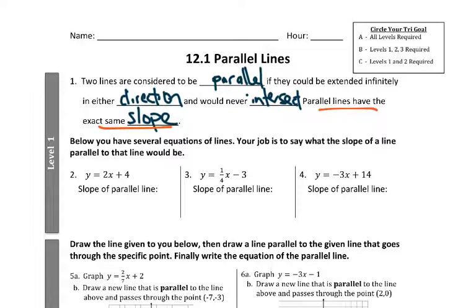In question two, remember that the number right next to the x is our slope of a line, and so if we had a slope of any parallel line, we know it would also have a slope of 2. In question three, the slope is 1 fourth, so the slope of any line parallel to that line is also going to have a slope of 1 fourth. And here we have a slope of negative 3, so if we have any parallel line to that, it will also have a slope of negative 3.